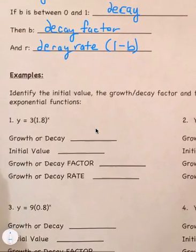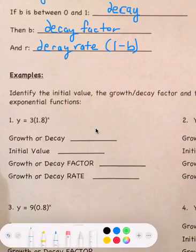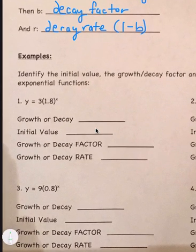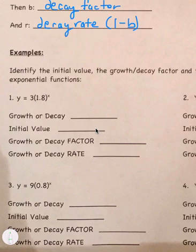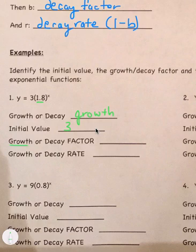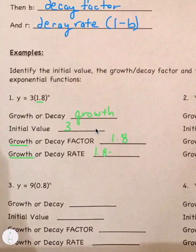Let's look at some quick examples. We need to identify the initial value, the growth or decay factor, and the growth or decay rate of exponential functions. For y equals 3 times 1.8 to the x power: 1.8 is our b value, and since it's greater than 1, this is growth. The initial value is 3, the growth factor is 1.8, and the growth rate is b minus 1 — that's 1.8 minus 1, which equals 0.8.